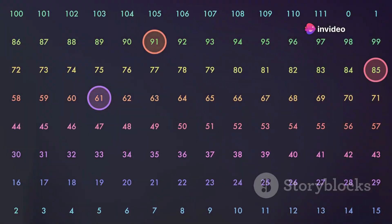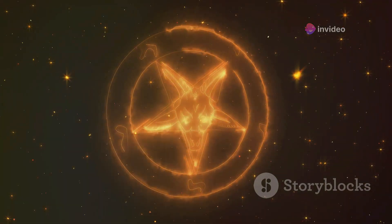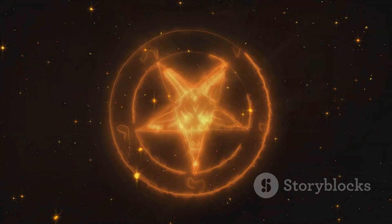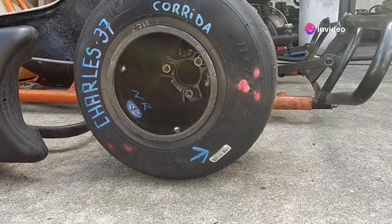The frequent appearance of 37 begs the question: is it merely a coincidence, a quirk of chance, or could it be something more, a subtle hint at a deeper cosmic design? The human mind is naturally inclined to seek patterns and meaning, even in seemingly random occurrences.